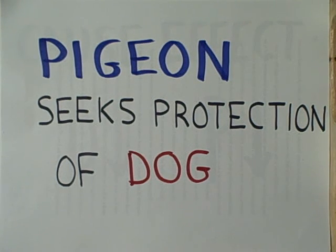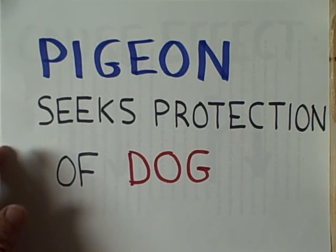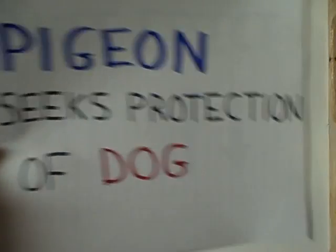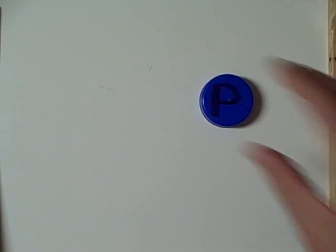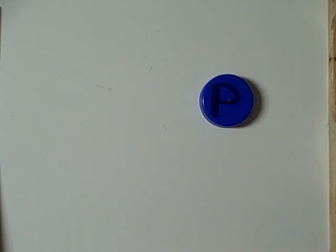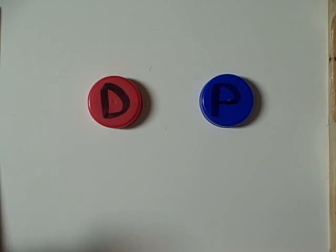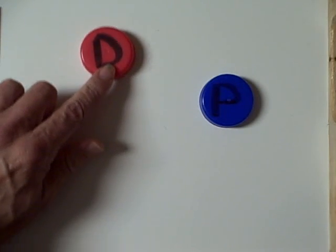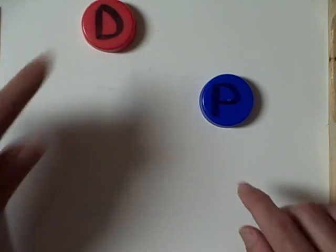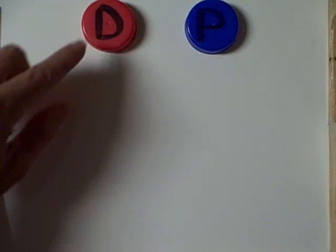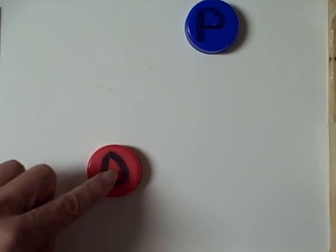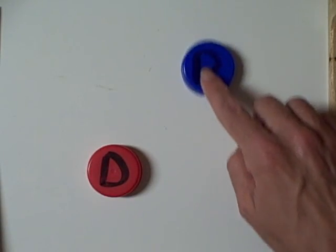Now, that pigeon seeks the protection of the dog because he's afraid of the snake. So there's the pigeon, and there's the dog. If the dog goes in one direction, the pigeon's going to follow. The dog goes down, the pigeon follows.